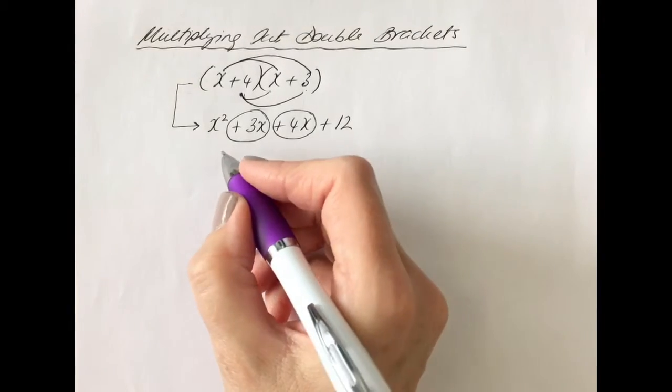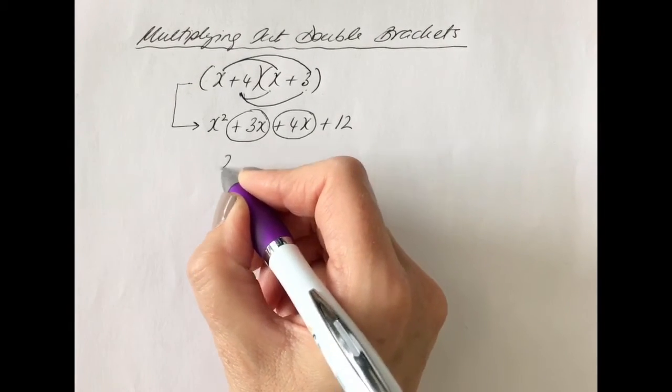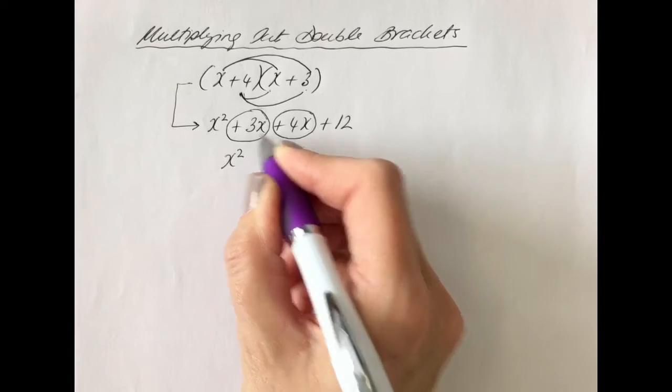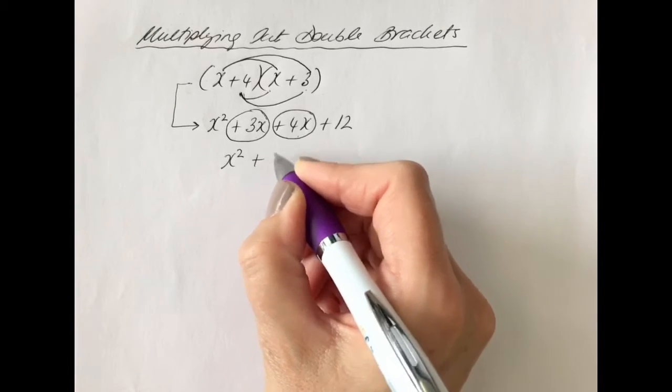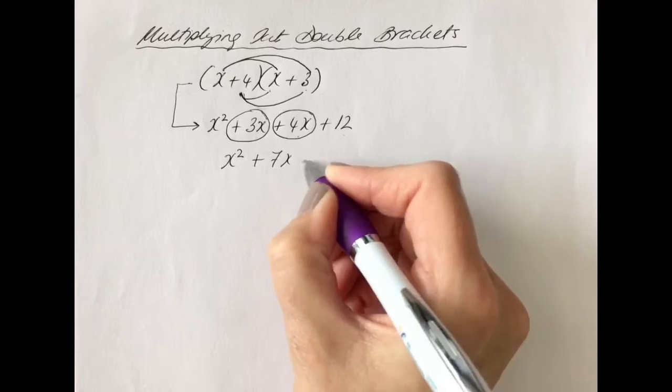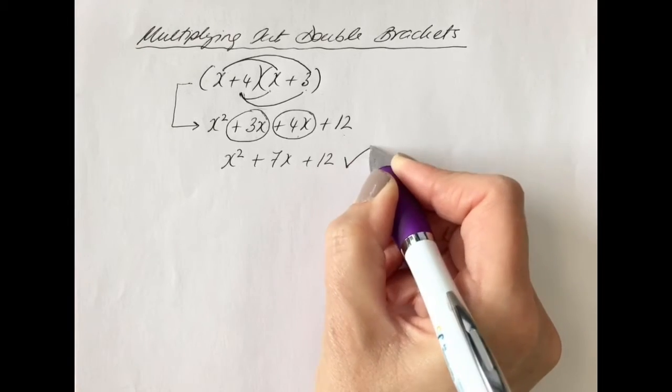What we get as our final answer is x squared, 3x and 4x is 7x, and 12. That is our final answer.